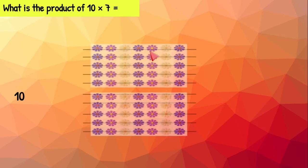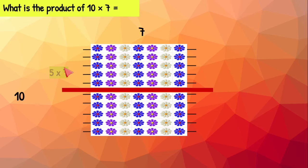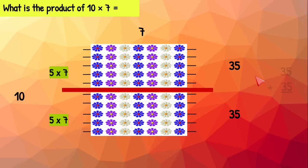Ten times seven — ten rows of seven. Let's chop across this time instead of up and down. So we still have two smaller arrays, one on the top and one on the bottom. On the top we have five rows of seven. We know five times seven equals 35. The bottom array is also five rows of seven, which also equals 35. Let's put 35 and 35 together, which gives us 70.